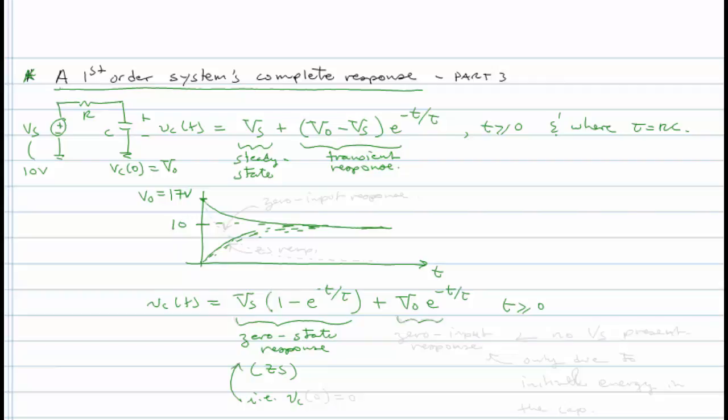In other words, i.e., VC at time zero is equal to zero. This right here is actually the zero state response.